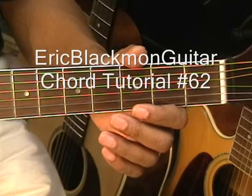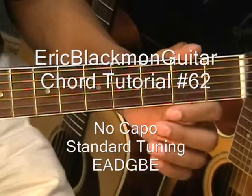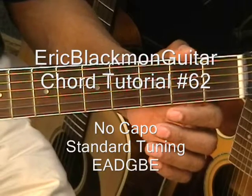Hi, and welcome to chord tutorial number 62. The guitar is tuned standard: E, A, D, G, B, E. And there's no capo.